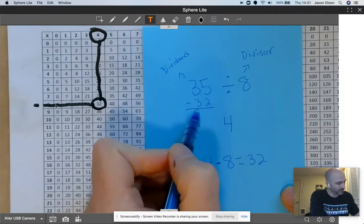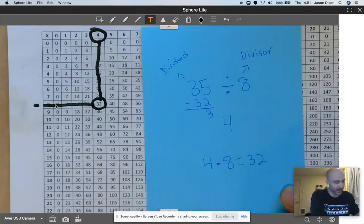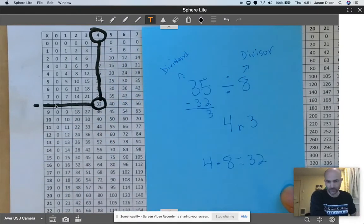So I'm going to go 35 minus 32, 5 minus 2 is 3. So then 35 divided by 8 equals 4 with the remainder of 3.